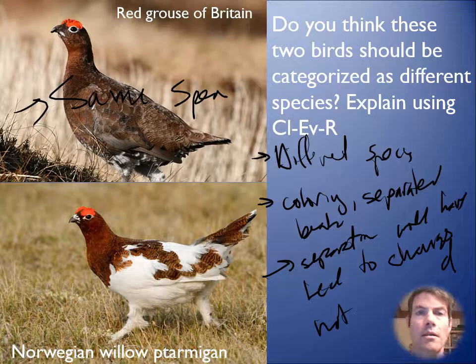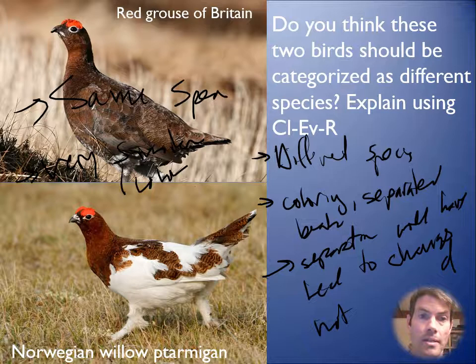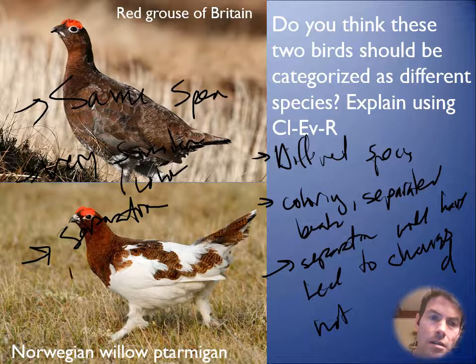Or we could go the other route - that they are the same species. The evidence: they're very similar, with only color differences, and the rest of the features are very similar. The reasoning: the separation has not been long enough to cause enough change, and therefore not enough evolution yet.